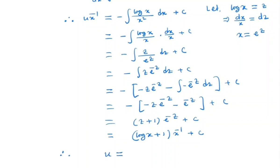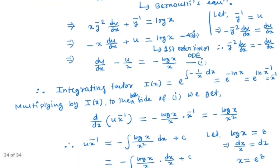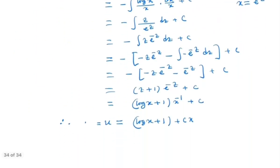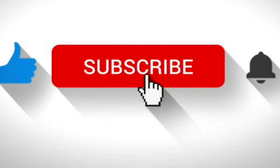So by putting z back, we have -(log x + 1) and e^(-z) is x^(-1) + c. So here we have u = -(log x + 1)/x + c, and u is nothing but y^(-1). So this is the general solution of the following given ODE.